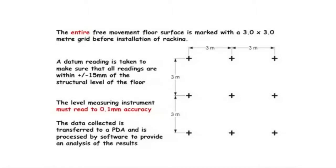You need a leveling instrument accurate to 0.1 of a millimeter. I've seen reports generated by people who've approximated to the nearest millimeter — if you don't have an instrument that can measure to that degree of accuracy, you're not getting a true picture. That data is collected by the same PDA that you use with the Property Two reader.